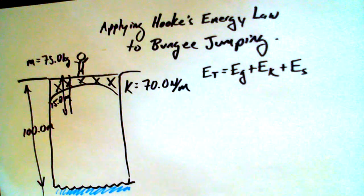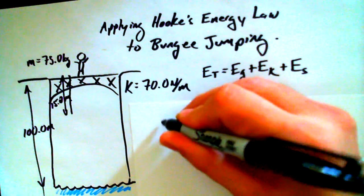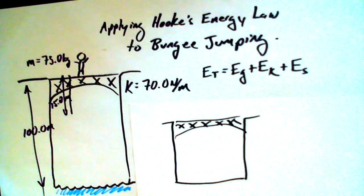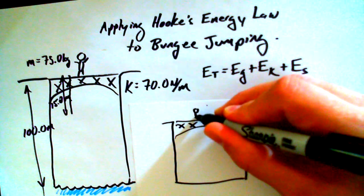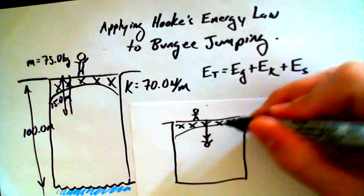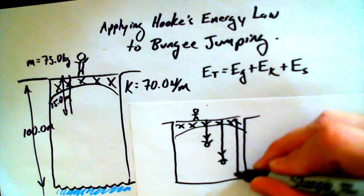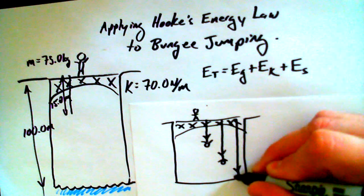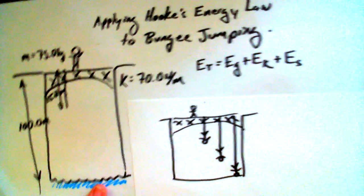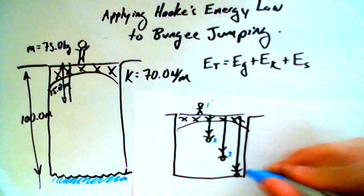Let's map this out. As this person falls — here's our bridge again — there are critical positions. When they start off at the top, that's position one. When they just get to the end of the rope, that's position two. On their way down is position three. And at some point they're going to come to a stop — let's assume they don't hit their head — that's position four.